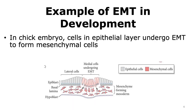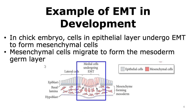Looking at an example of EMT in development, we examine a chick embryo. In the chick embryo, cells in the epithelial layer undergo EMT to form mesenchymal cells. The short gray rod-like structures in the figure are the epithelial cells, and those shown in the blue box undergo epithelial mesenchymal transition, migrating toward the lower part to form mesenchymal cells. These mesenchymal cells then further develop to form the mesoderm. Thus, epithelial mesenchymal transition is a very important process.